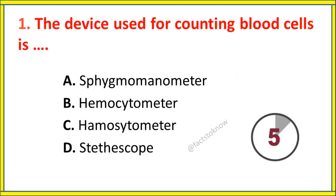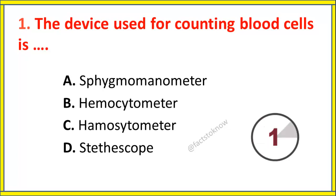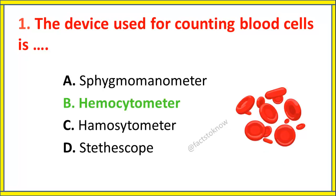Question number 1. The device used for counting blood cells is? The correct answer is option B: Hemocytometer.